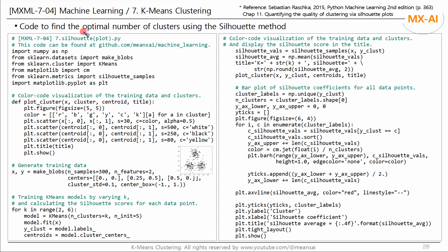Lastly, let's write code to determine the optimal k using the silhouette score. We will use scikit-learn's silhouette samples class, which calculates the silhouette coefficient for every data point. Train the k-means model by varying k from 2 to 5. At each iteration, compute the silhouette coefficients for all data points and calculate their average as the silhouette score. Visualize the data points and their clusters, and finally visualize the silhouette coefficients of the data points belonging to each cluster.